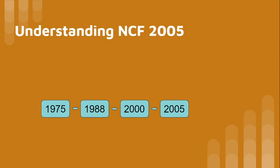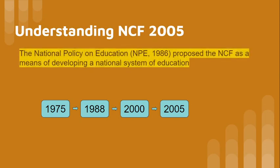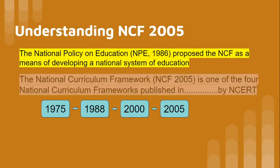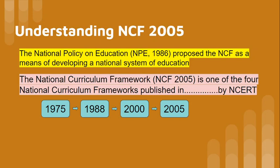Now, which national policy was in the past? NPE 1986 — the National Policy on Education 1986 — proposed a national structure system of education, under which NCF 2005 came. As I told you, it has been published 4 times by NCERT: first in 1975, 1988, then in 2000, and then in 2005.